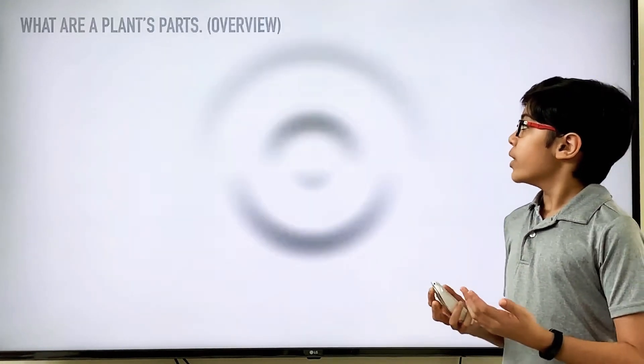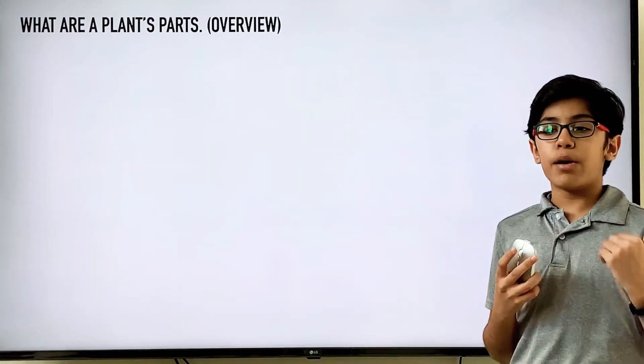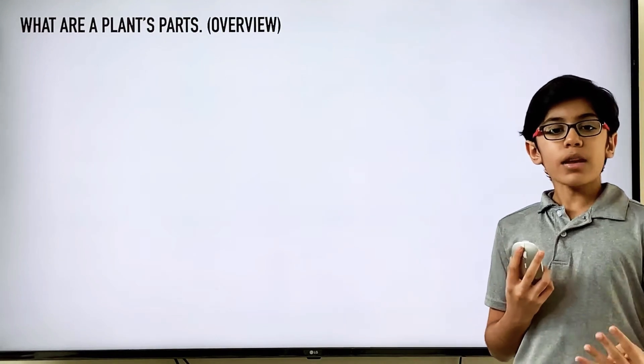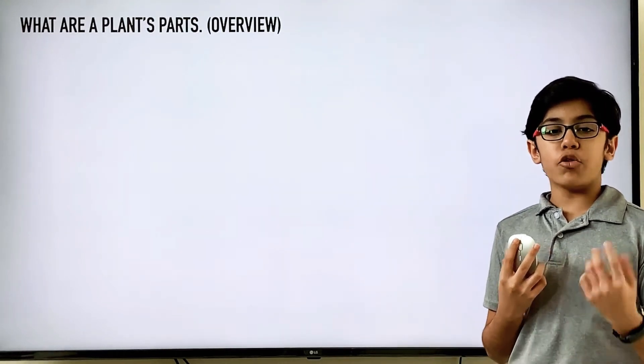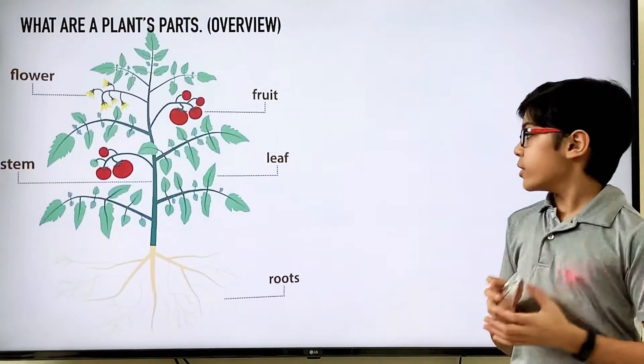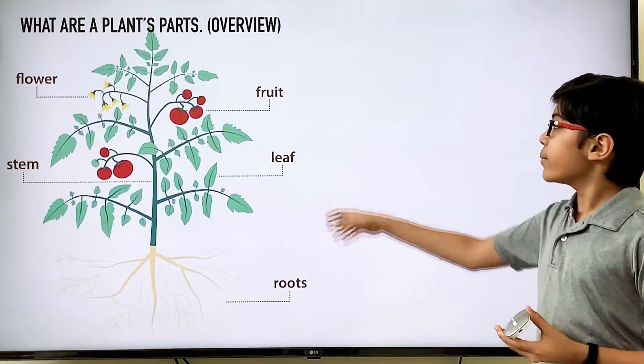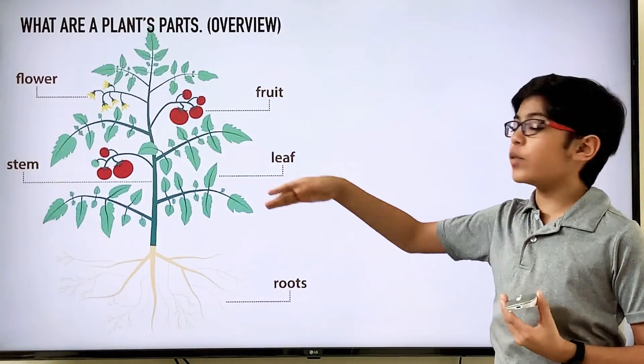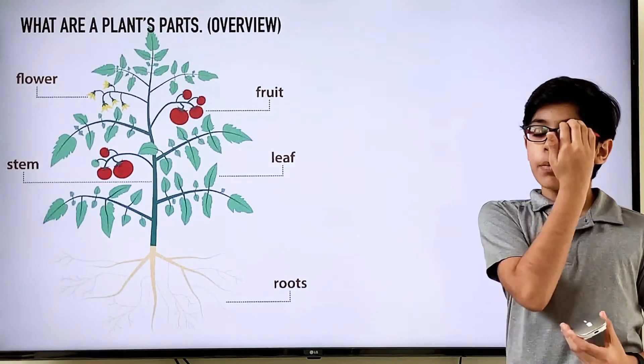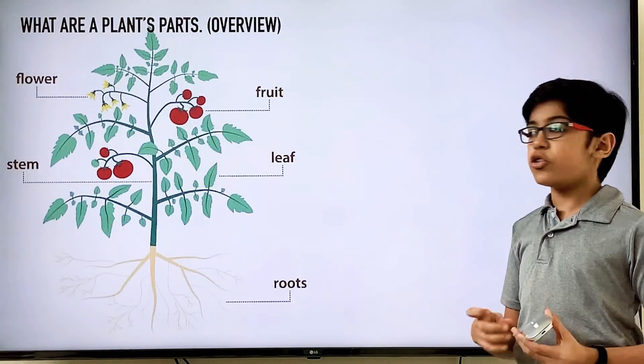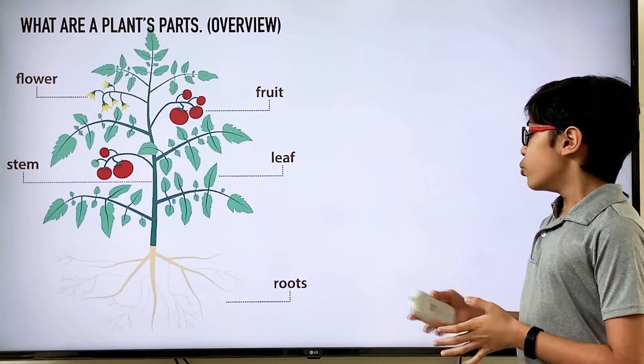So now, an overview of a plant's parts. A plant has four to five main parts. In this picture, it has the roots, leaves, fruits and flowers, which don't apply to all plants but they apply to some, and most plants have a stem.